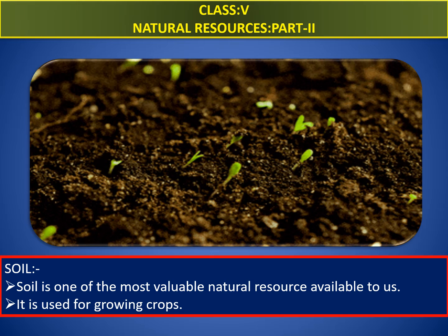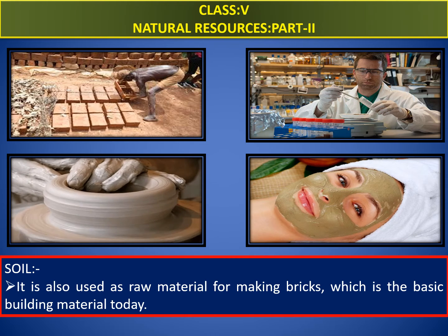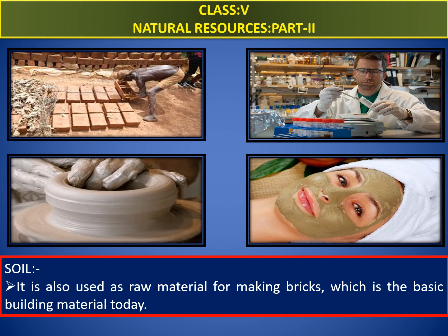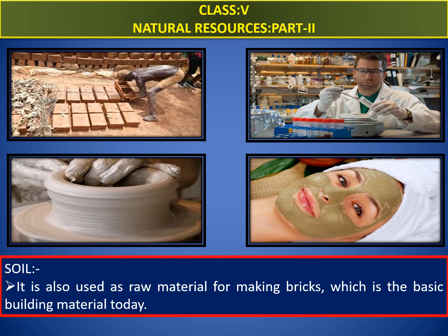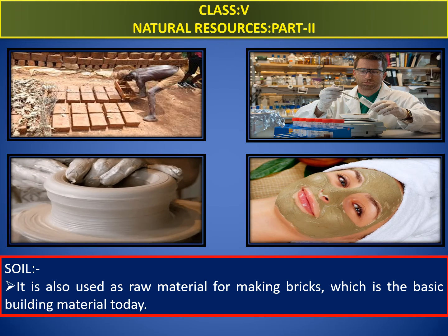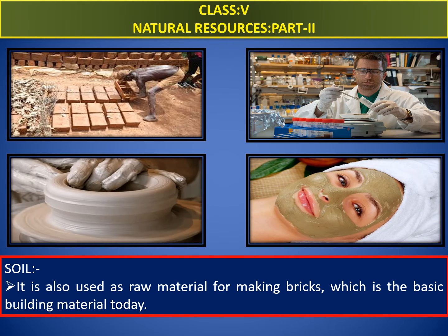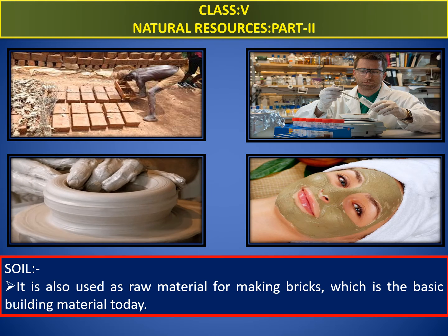Soil is one of the most valuable natural resources available to us. It is used for growing crops. Topsoil is known as the habitat of many living organisms because it provides shelter for them. It is also used as raw material for agriculture. Soil has vital nutrients for plants. Soil is an important part of the building process. Clay soil is used in making ceramics or pottery. Soil is commonly used in antibiotics as medicine. Some beauty products are also made with soil.